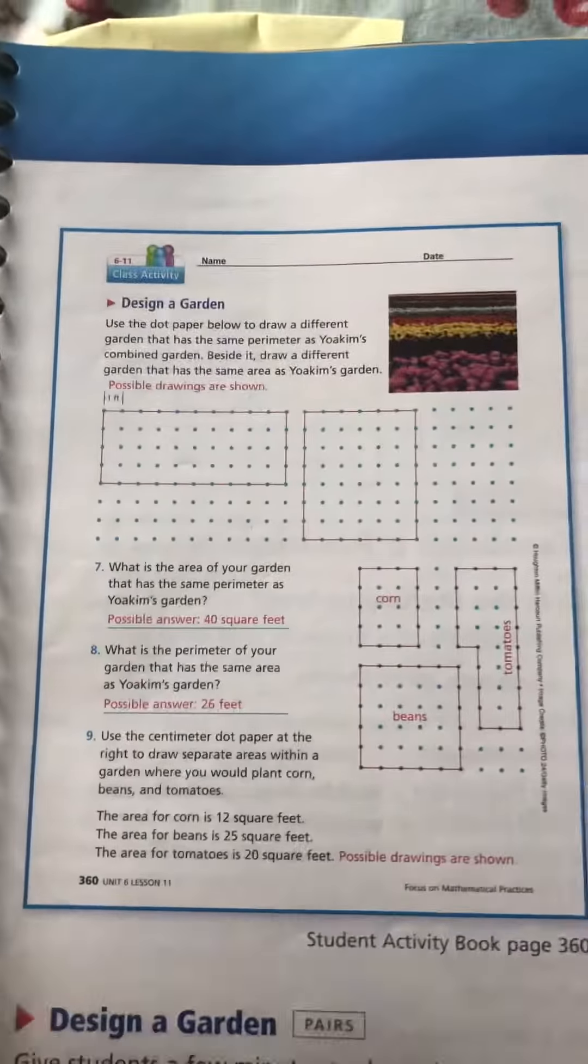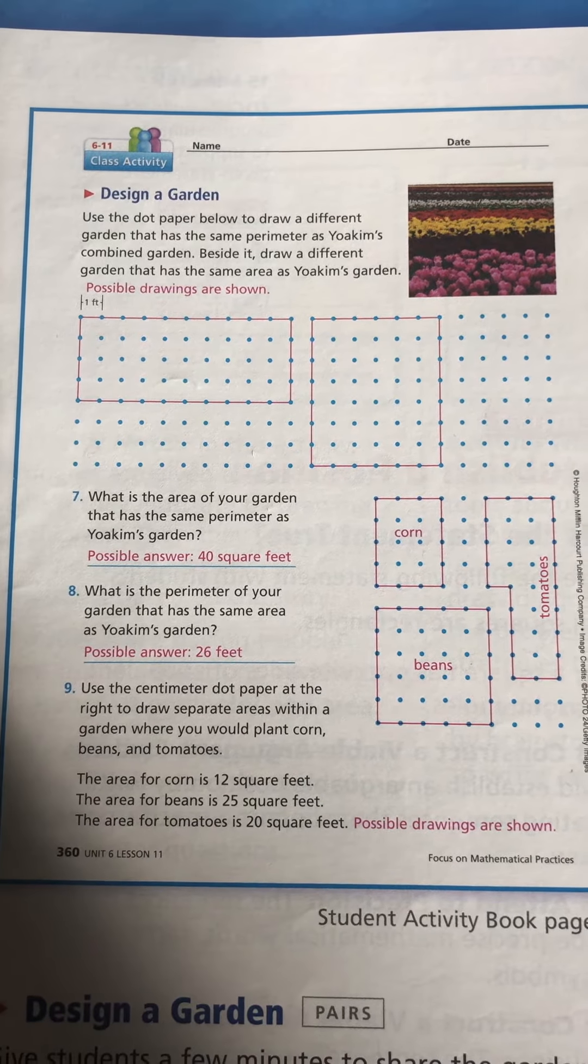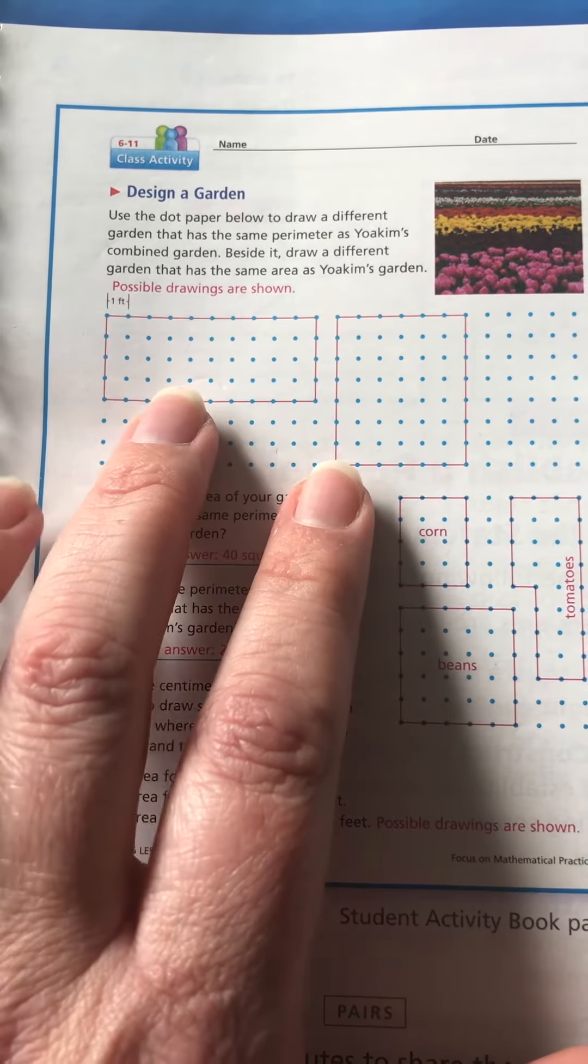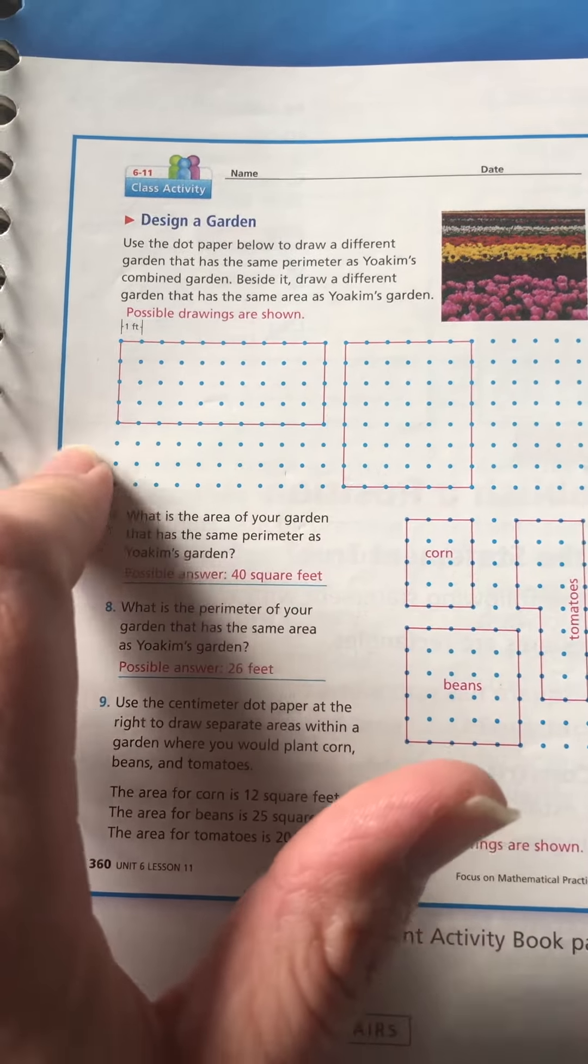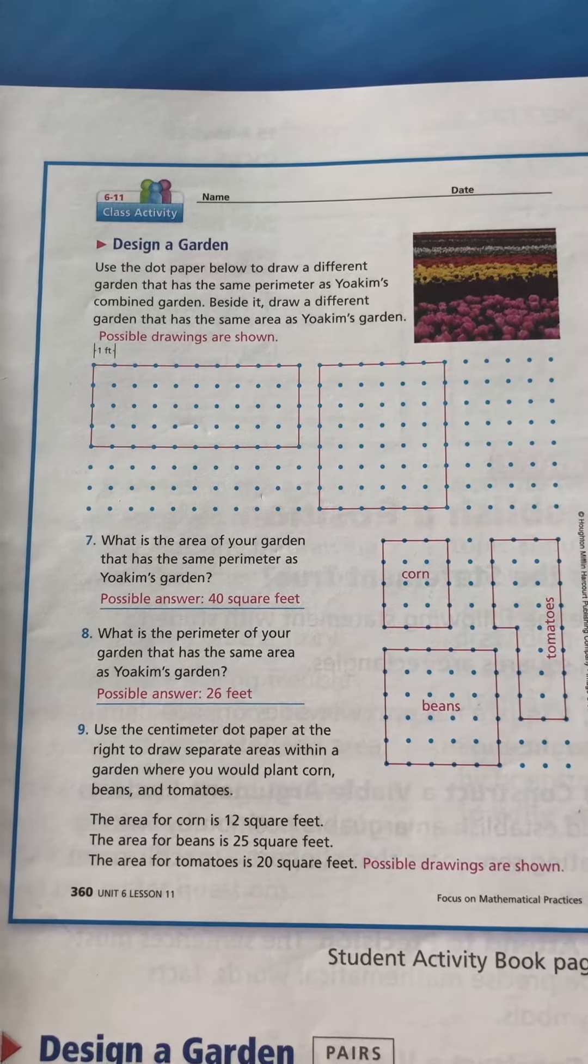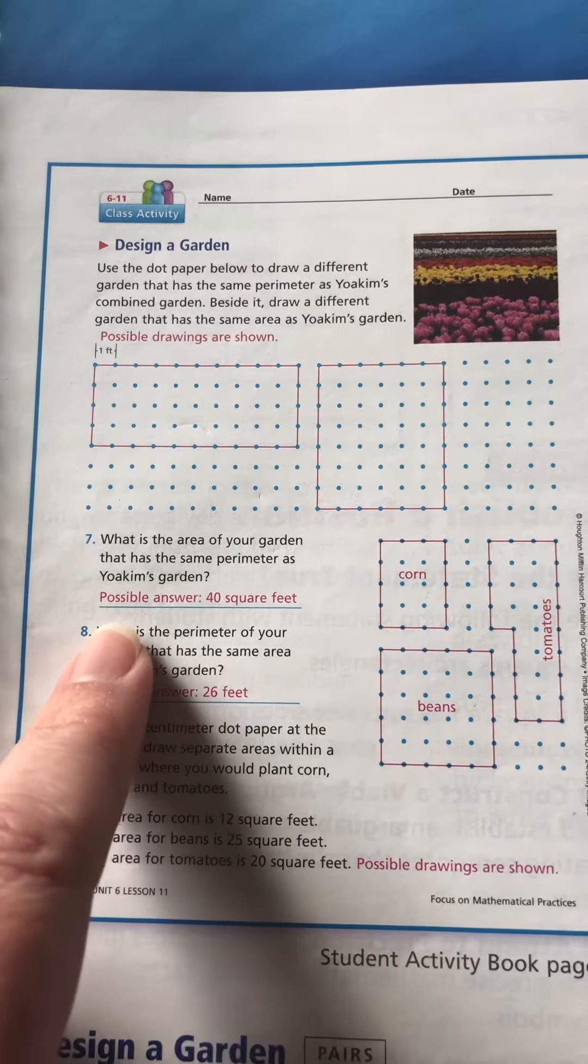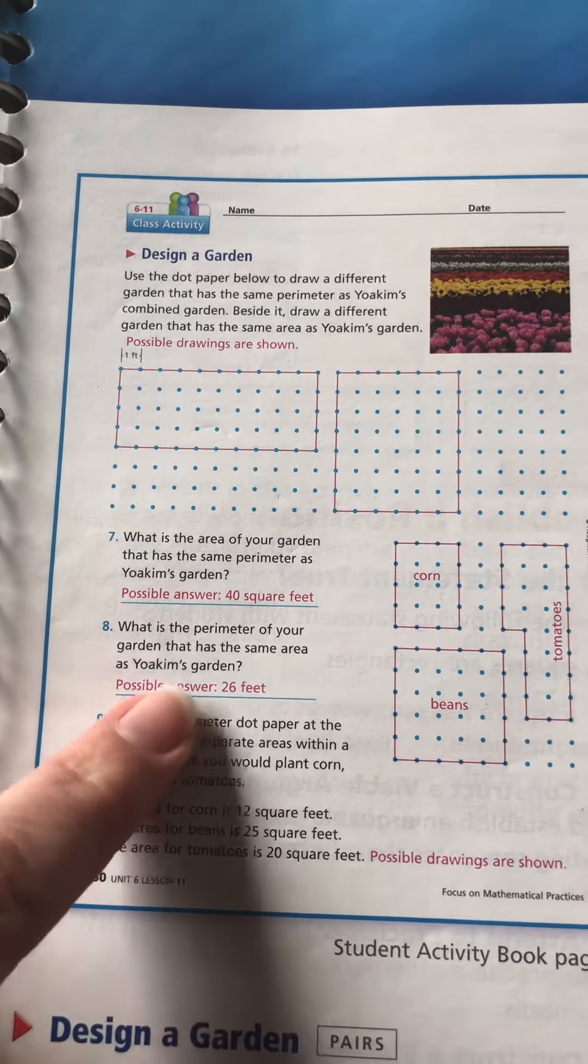Then when you had to come over here and draw a different garden with the same perimeter and then a different garden with the same area, these are possible answers. But basically you were trying to make a shape that had a perimeter of 28 feet and a shape that had an area of 42 square feet. If you happen to pick what I did, what is the area of your garden that has the same perimeter? 40 square feet.